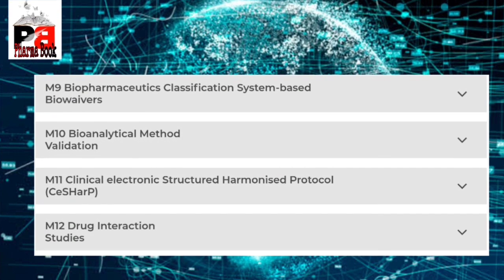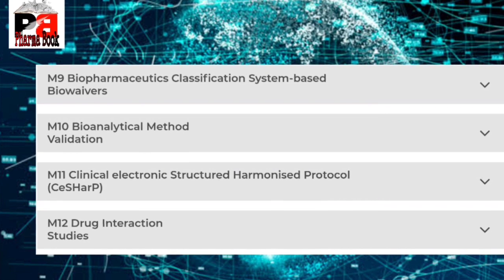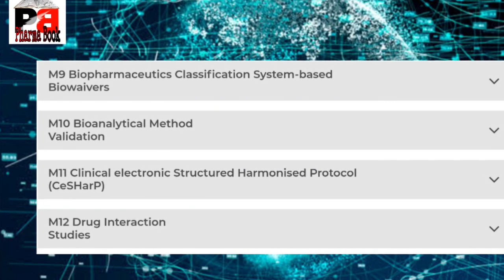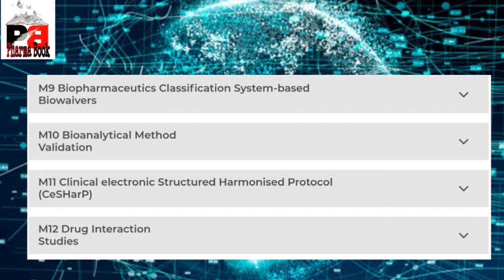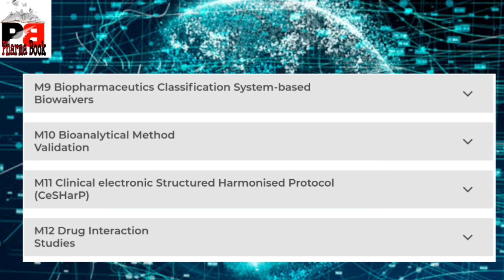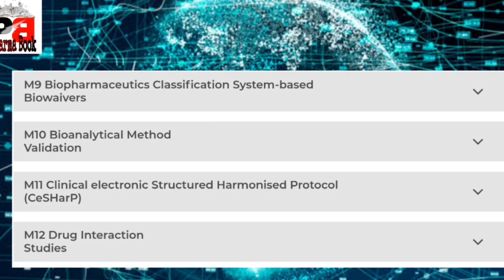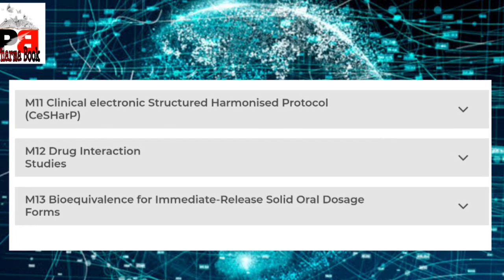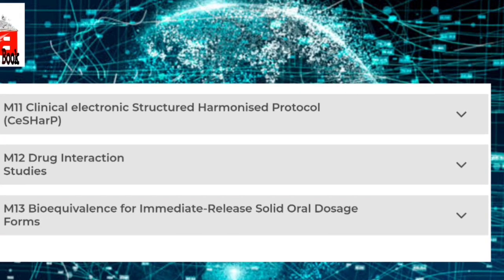Continuing multidisciplinary guidelines: M9 Biopharmaceutical Classification System Based Biowaiver, M10 Bioanalytical Method Validation, M11 Clinical Electronic Structured Harmonized Protocol, M12 Drug Interaction Studies, M13 Bioequivalence for Immediate Release Solid Oral Dosage Forms. That's all about ICH guidelines. We have not discussed the subcategory guidelines of Quality, Efficacy, Safety, and Multidisciplinary here.